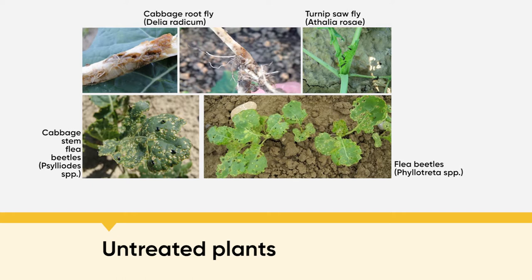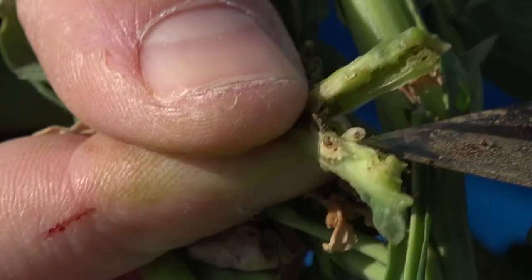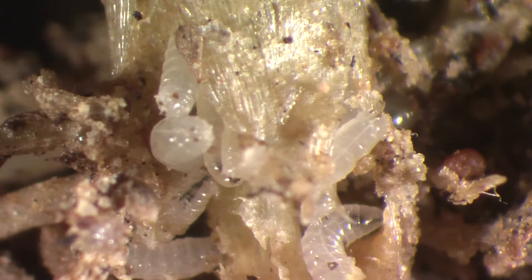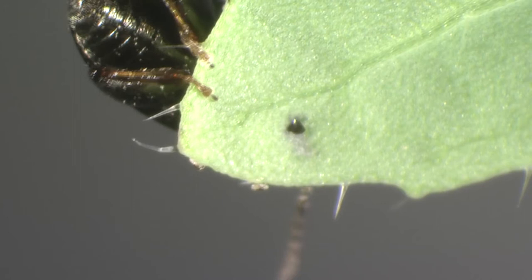Damage caused by pests can significantly harm plants, which will also impact yield. Trials show that 21 days after sowing, 100% of plants were infested, with 75% damaged leaf area. The biggest problem involves many different insects — for example, cabbage flies, flea beetles, and turnip sawflies — which like to feed on these plants and cause a lot of damage.